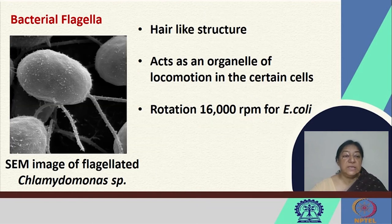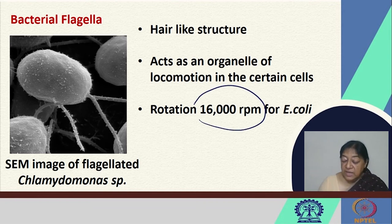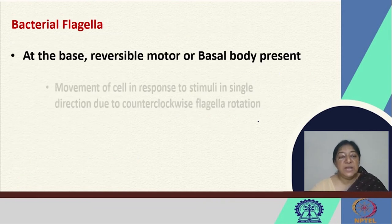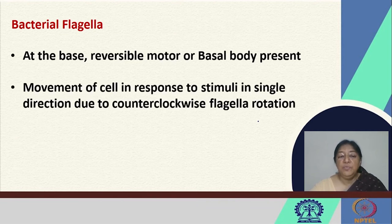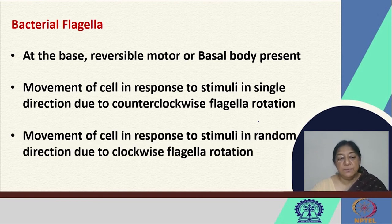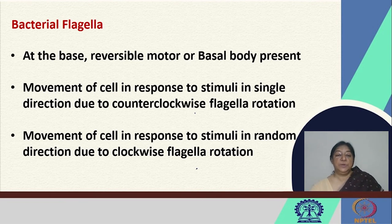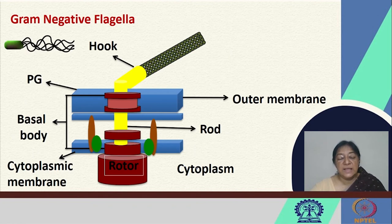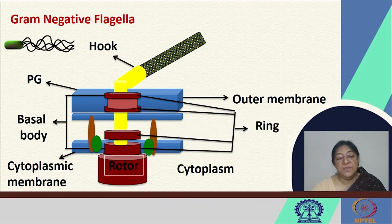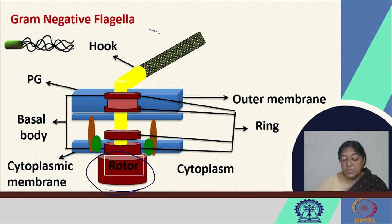The other important rotary protein is bacterial flagella. It is a hair-like structure that acts as an organelle of locomotion in several cells, with very high rotation speeds in E. coli. At the base the flagella has a reversible motor. Movement of the cell in response to stimuli in a single direction occurs due to counter-clockwise rotation of the flagella, called a 'run,' while clockwise rotation produces 'tumble.' Looking at the structural aspects, there is the cytoplasmic membrane, outer membrane, a specific hook of attachment, rings, and a motor that drives the movement of the flagella.